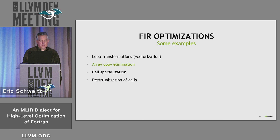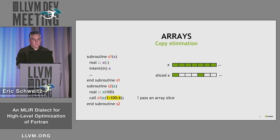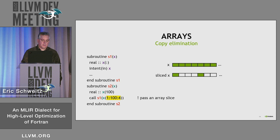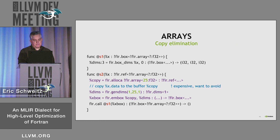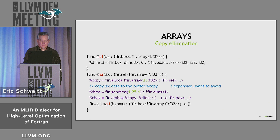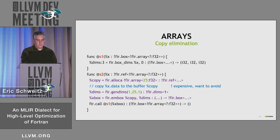The next example is array copy elimination. This is some Fortran where subroutine two is calling subroutine one S1. The original array is X and it has a hundred elements. We're passing to S1 a sliced version of X — every fourth element for 25 elements. Our naive compiler may choose to pack those 25 elements into a new array, a new vector, allocating a new array, copying the original data into it, and then doing the inbox operation and calling S1. Of course, we probably don't want to do that copy.